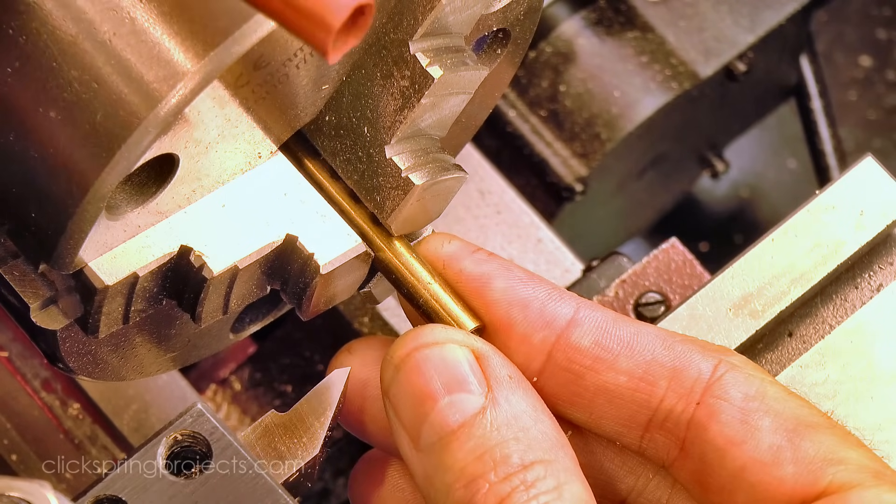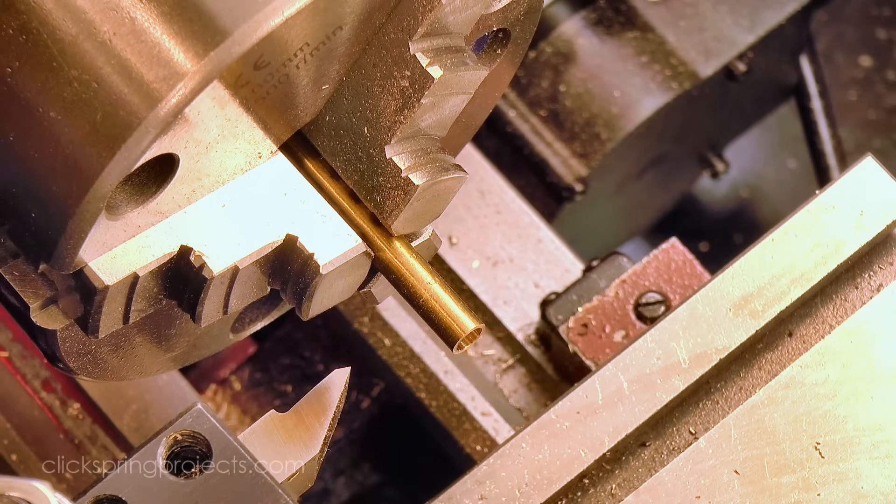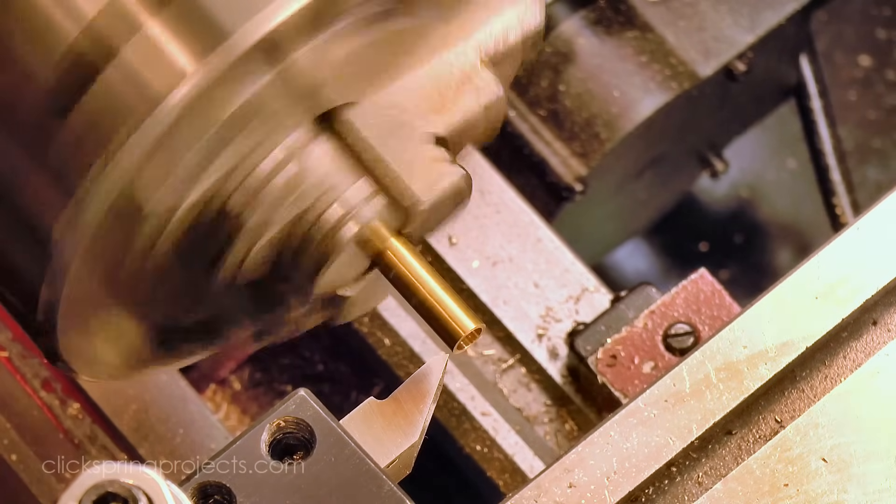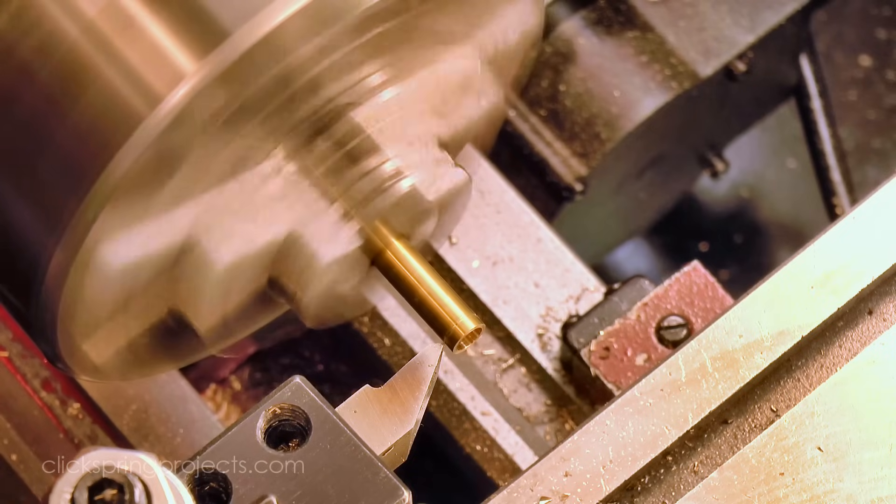Next I extended the stock and formed the grip. The tool I'm using here is a standard 60 degree threading tool. The plunge cuts are 0.5mm deep and I've spaced them 2mm apart.